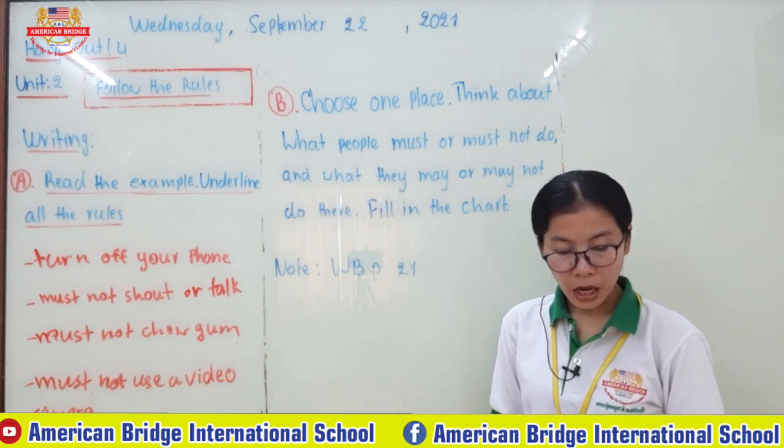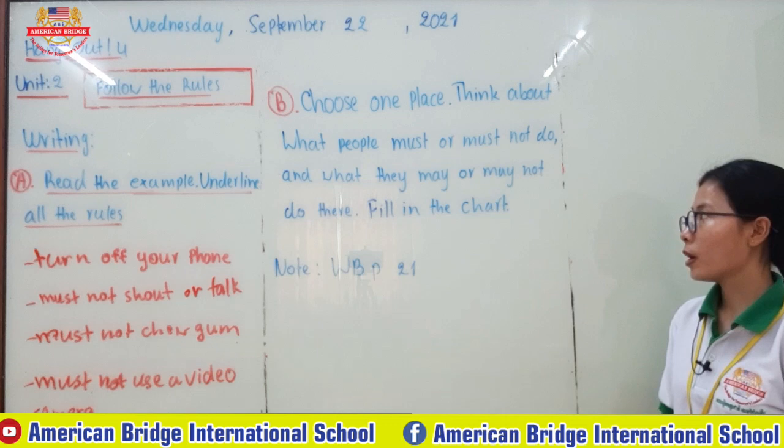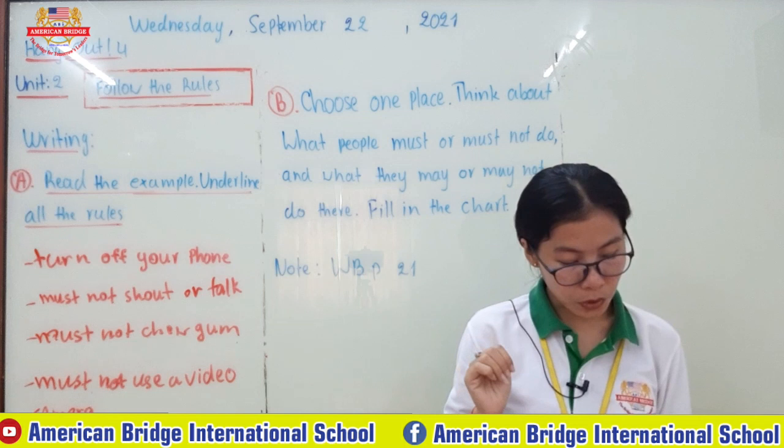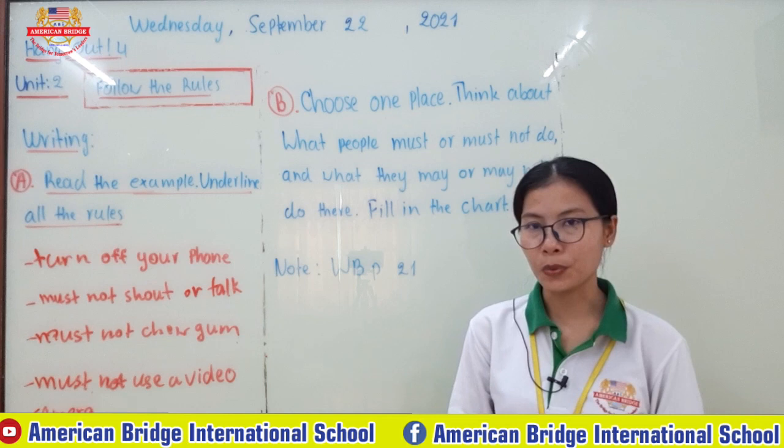Hopefully you can find all the answers the same as the teacher. Now let's go to part B: choose one place, think about what people must or must not do and what they may or may not do. We have four places for you to choose: museum, public park, movie cinema, restaurant, or other — where you can add another place beside what we have provided.